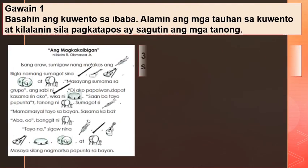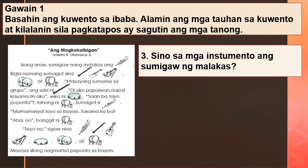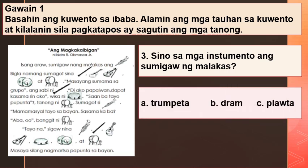Ikatlong bilang: Sino sa mga instrumento ang sumigaw ng malakas? A. Trompeta, B. Drum, C. Plauta.